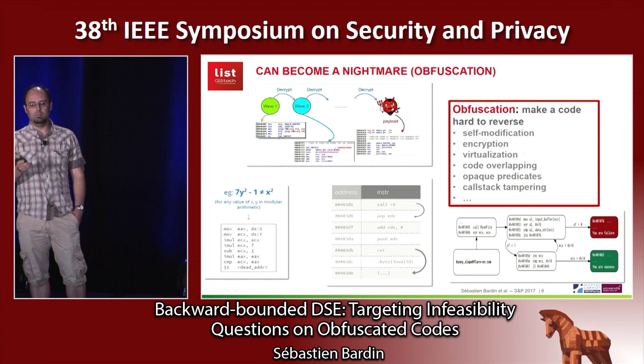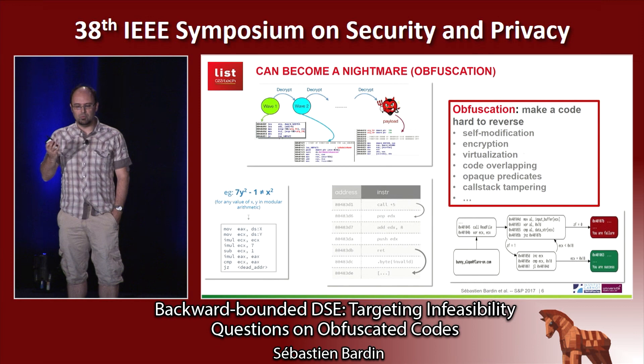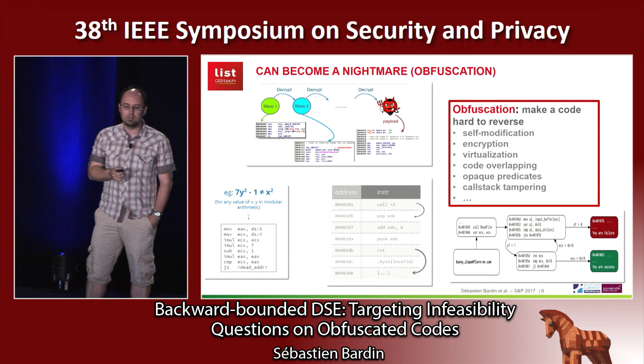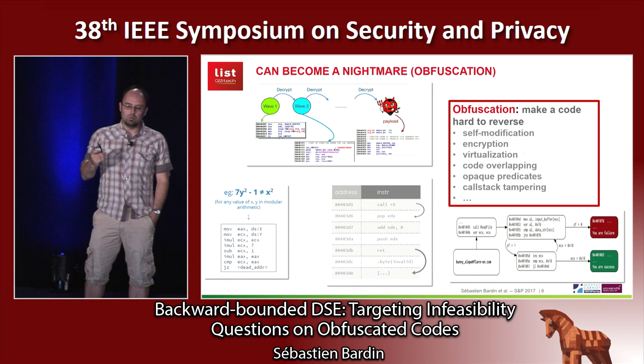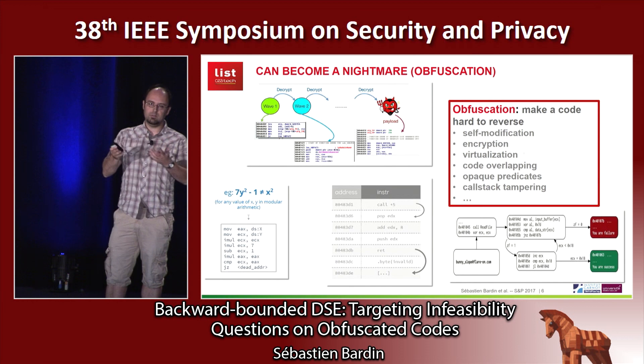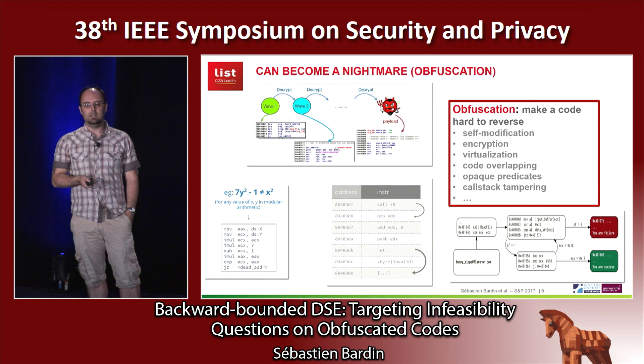In the case of malware, when you have obfuscation, it just becomes a nightmare. Obfuscations are meant to make code hard to reverse. There are many different kinds: you can think of self-modification, where you have a first layer which writes the second layer, which writes the third layer, and so on, until you have the real payload. You also have encryption, virtualization, code overlapping, opaque predicates, and so on. You can combine them to make the code really hard to understand.